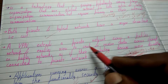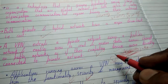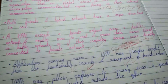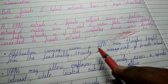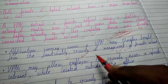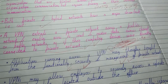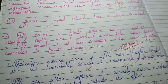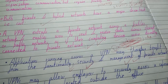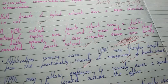VPN enables users to send and receive data across shared or public networks as if their computing devices were directly connected to the private network. Applications running across a VPN may therefore benefit from the functionality, security, and management of private networks.